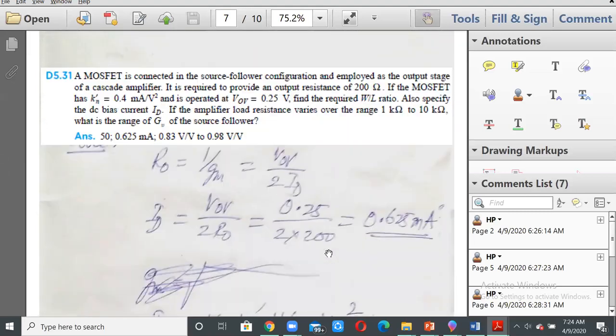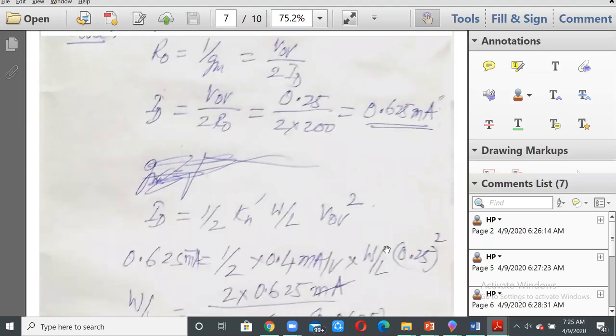So R naught is again 1 by gm, which is 2ID by VOV. Therefore 1 by gm will be VOV by 2ID. ID will be VOV by 2R naught, same thing as earlier: 0.25 divided by 2 into 200 equal to 0.625 milliamperes. ID is equal to half of k prime W by L VOV squared.